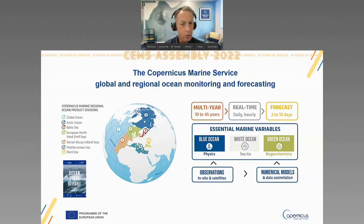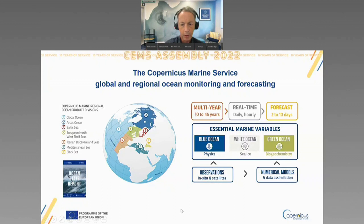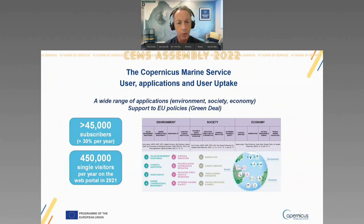Every year we produce an ocean state report — a peer-reviewed publication, a high-level summary for policymakers and the general public. In terms of user applications, we are close to 50,000 subscribers to the service with a lot of visitors to the website. We serve a wide range of applications covering environment, society, and economies, and this has been developed quite well over the past couple of years.